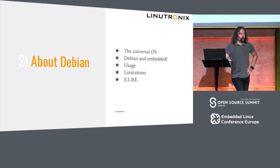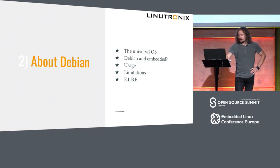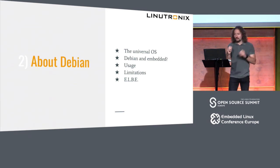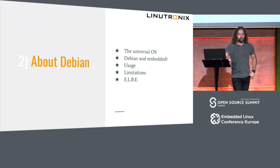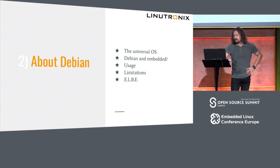Some people think: there are other distributions out there that can do the work of creating a distribution for me. One example of those distributions is Debian, called the Universal OS as a slogan. You might ask: is it universal enough that I can even use it for embedded? We will have a look at the usage of Debian for embedded projects, and even Debian has limitations, so let's see what they are.